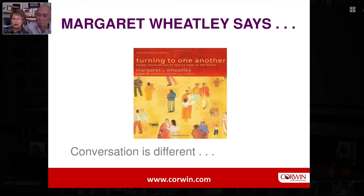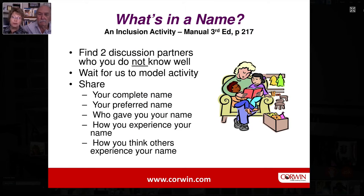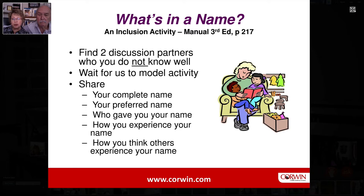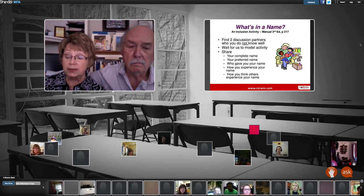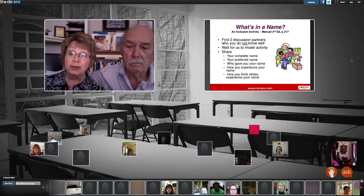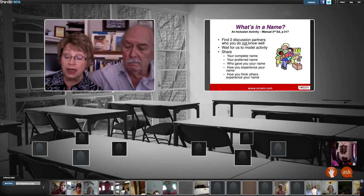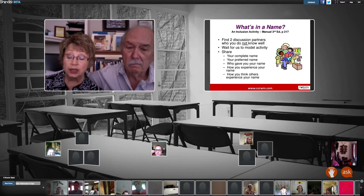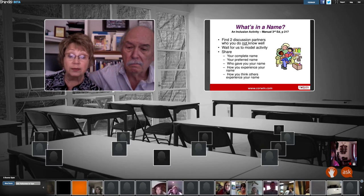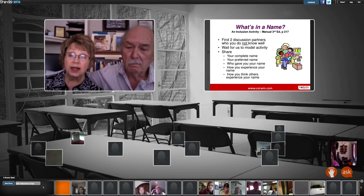We're going to take you into a little bit of that messiness now with Mitch's help. This is an activity we do with our groups just to help us get acquainted with each other, and then we'll debrief it in a few minutes. As a participant today, we're going to ask you to engage in an activity called 'What's in a Name.' We ask participants to engage with two or three other participants — someone you might know well, or today people across the webinar you may have never met before. You're going to share your complete name, your preferred name, who gave you your name, how you experience your name, and how you think others might experience your name. I'm going to model the activity, and then Mitch is going to tell us how you might find a person and pair up.